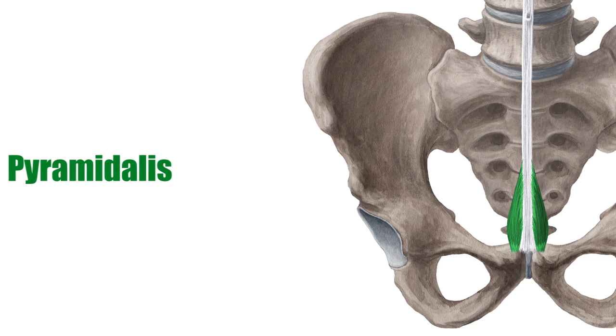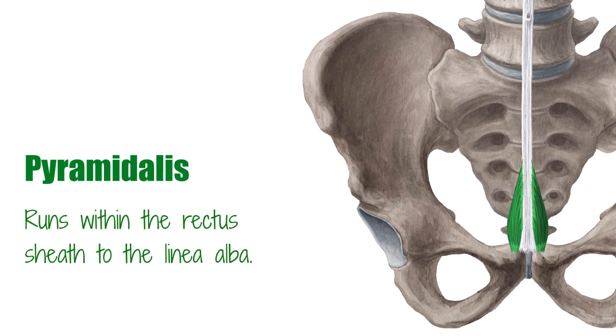The pyramidalis muscle is a small triangular-shaped, bilaterally located muscle that runs diagonally from the pubis, ventral to the insertion of the rectus abdominis muscle, and runs within the rectus sheath to the linea alba.